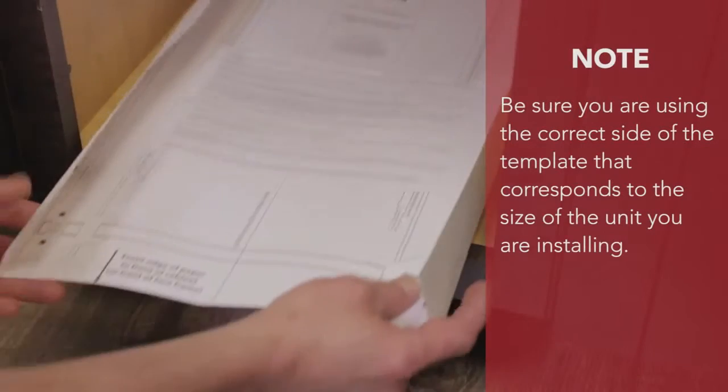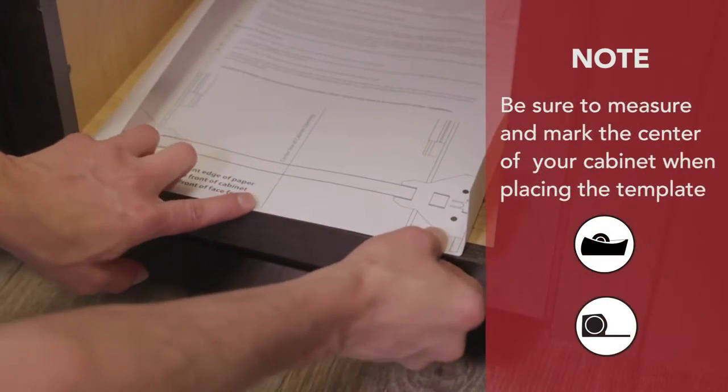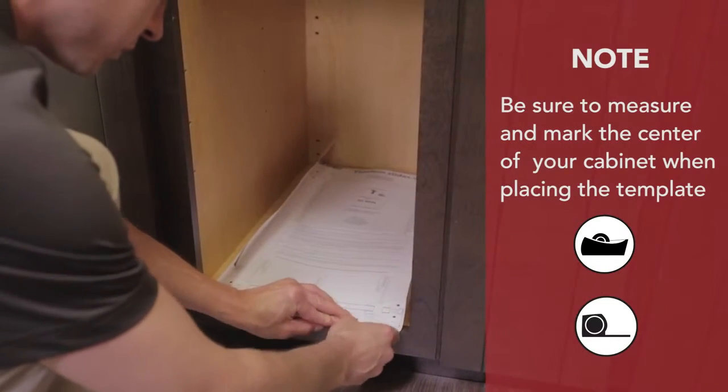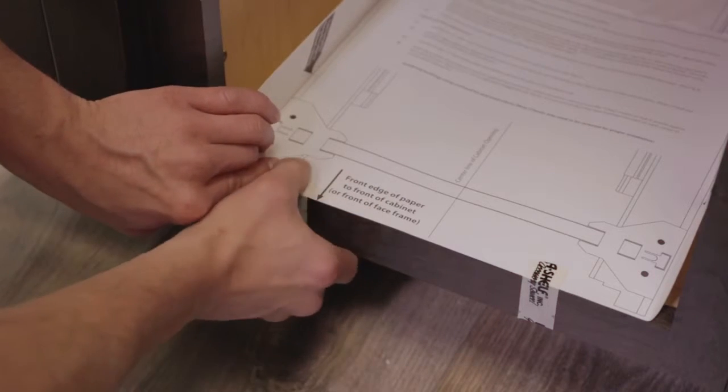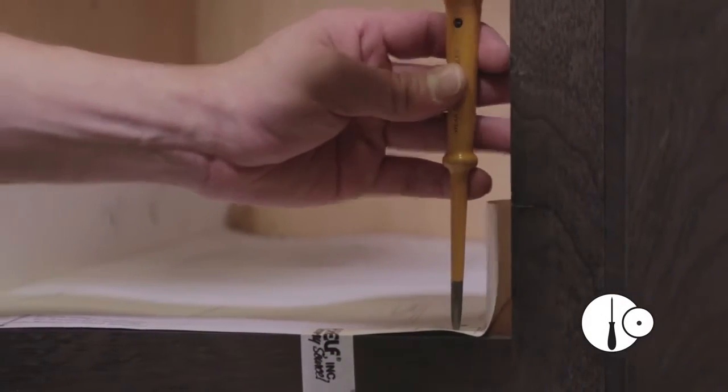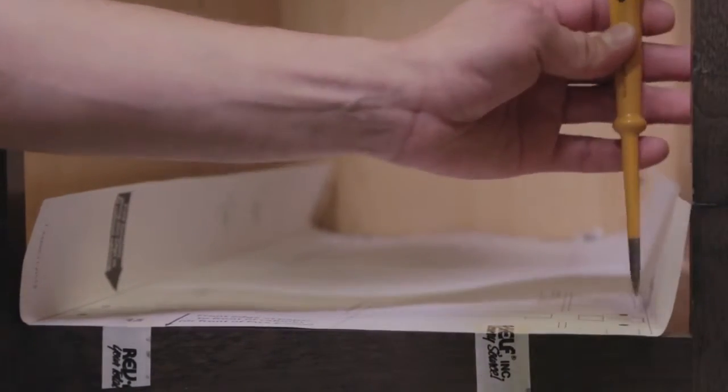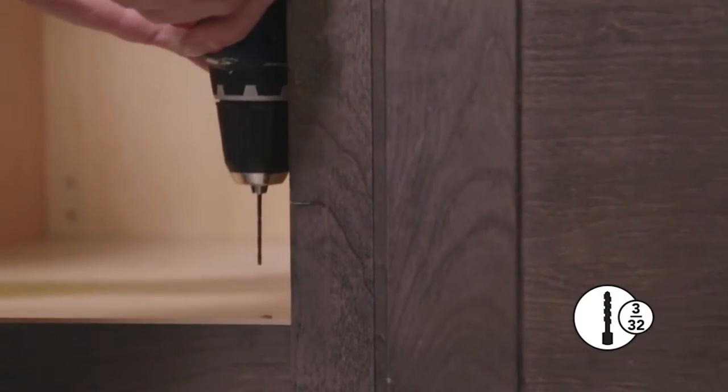Next, place the included mounting template inside of your cabinet. Use tape to secure your template to the bottom of your cabinet. The edge of the template should end where the back of your cabinet door will be. Use your awl to pre-punch the slide hole locations and then pre-drill the eight pilot holes using the 3/32 inch drill bit.